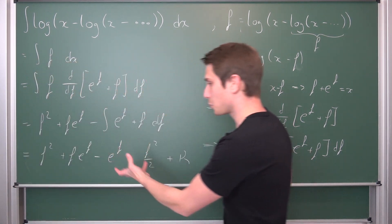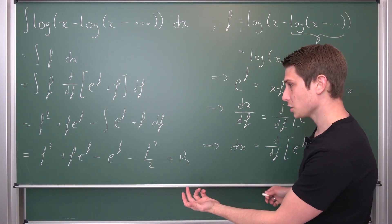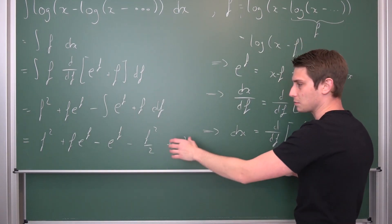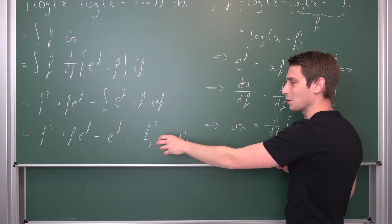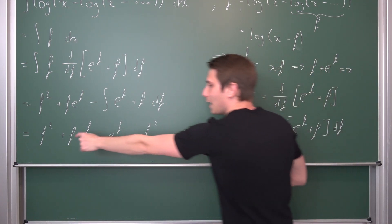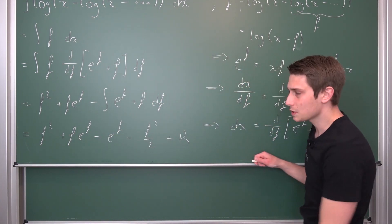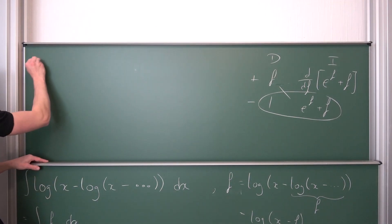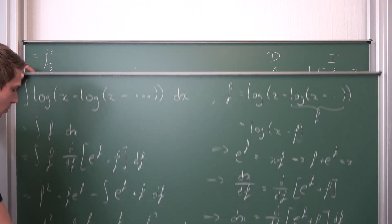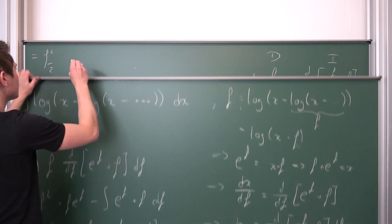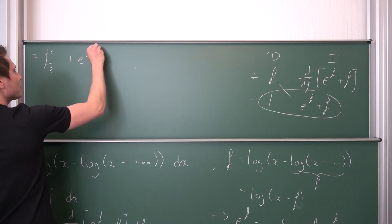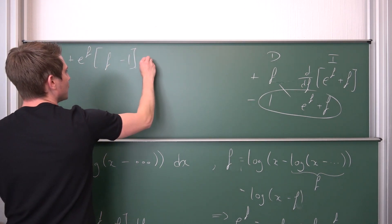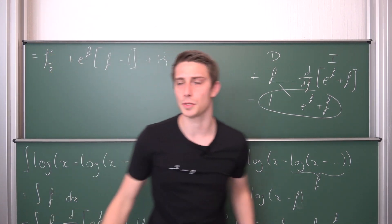It already looks pretty ugly. We can do some simplifications. f² minus f²/2 gives us f²/2. We also have e^f, so we get f²/2 + e^f(f - 1) plus some arbitrary constant kappa.